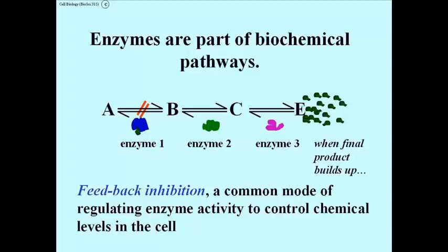So when E builds up, when the final product of this pathway builds up, very characteristically some of those molecules go back and bind to an enzyme early in the pathway, changing its shape, thus inhibiting it. That's called feedback inhibition.